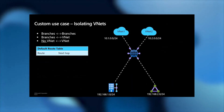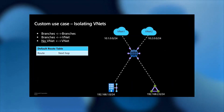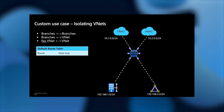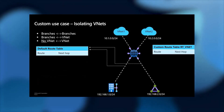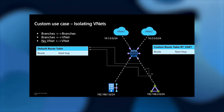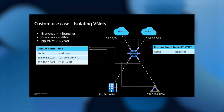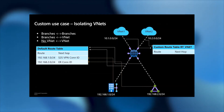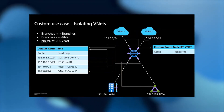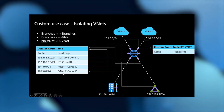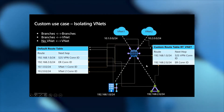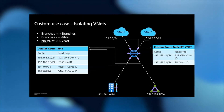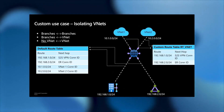Now let's look at how you isolate VNets. In this use case, you have two VNets and some branches, and you want branches to connect to each other and reach VNets, but the VNets need to be isolated. Starting with the default route table, branches associate to it. We create a custom route table — RTVNet — and the VNets associate to it. Because branches need to get to each other, they propagate to the default route table. The VNets also propagate their routes to the default route table so branches can reach them. Branches also propagate to the custom route table, so VNets can see branch routes. With this simple association and propagation, you have isolated the VNets while still keeping flows between VNets and branches.